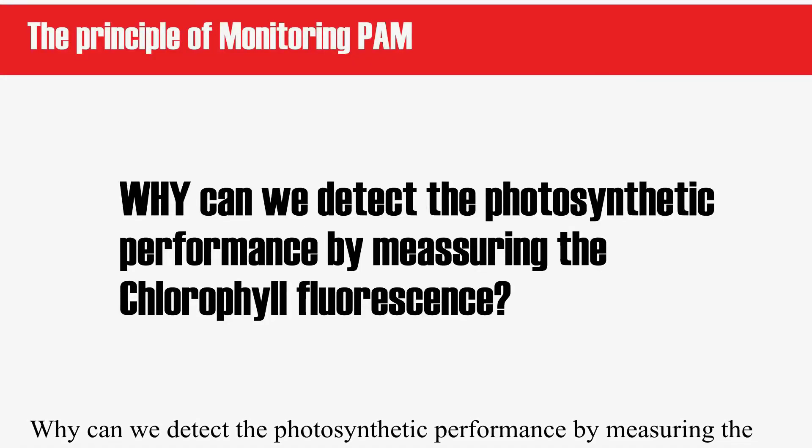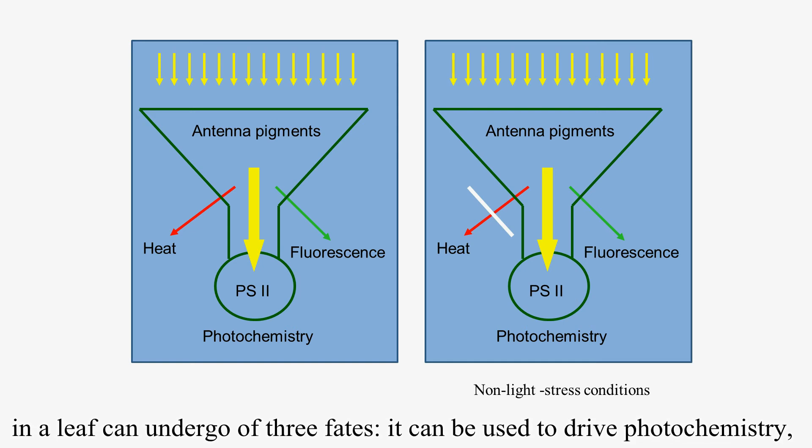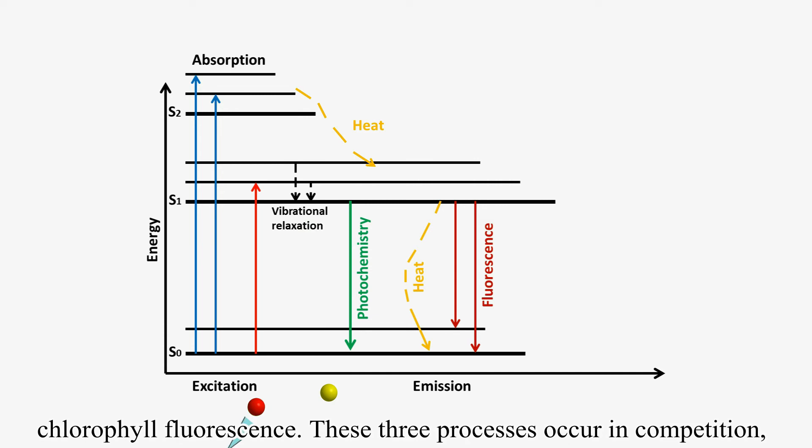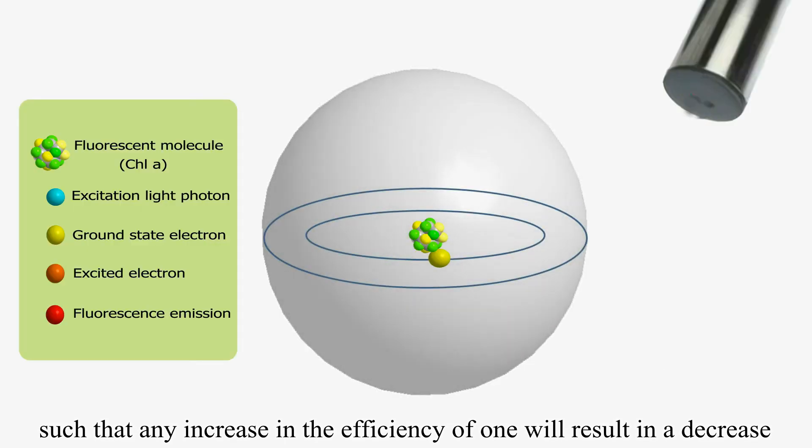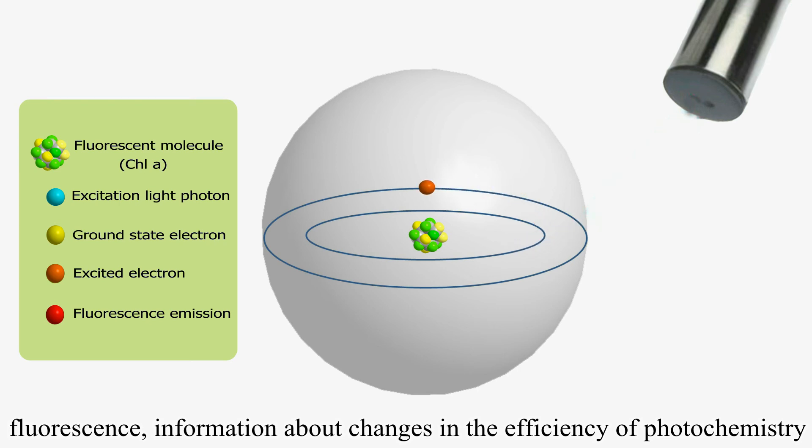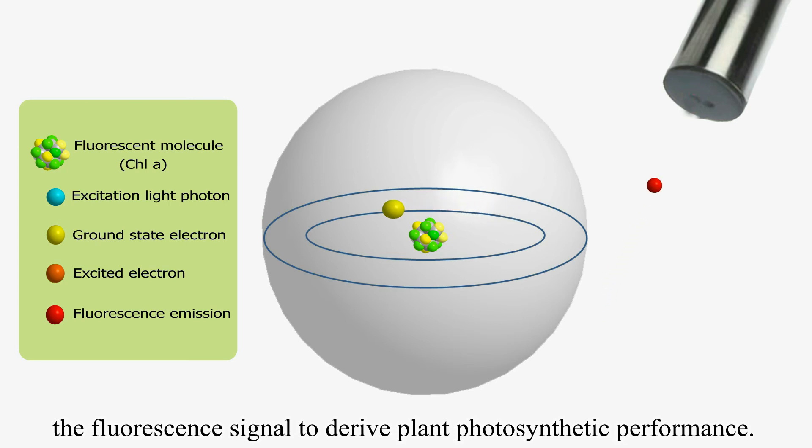Why can we detect the photosynthetic performance by measuring the chlorophyll fluorescence? Light energy absorbed by chlorophyll molecules in a leaf can undergo three fates: it can be used to drive photochemistry, excess energy can be dissipated as heat, or it can be re-emitted as chlorophyll fluorescence. These three processes occur in competition, such that any increase in the efficiency of one will result in a decrease in the yield of the other two. Hence, by measuring the yield of chlorophyll fluorescence, information about changes in the efficiency of photochemistry and heat dissipation can be gained. So we can, by measuring the fluorescence signal, derive plant photosynthetic performance.